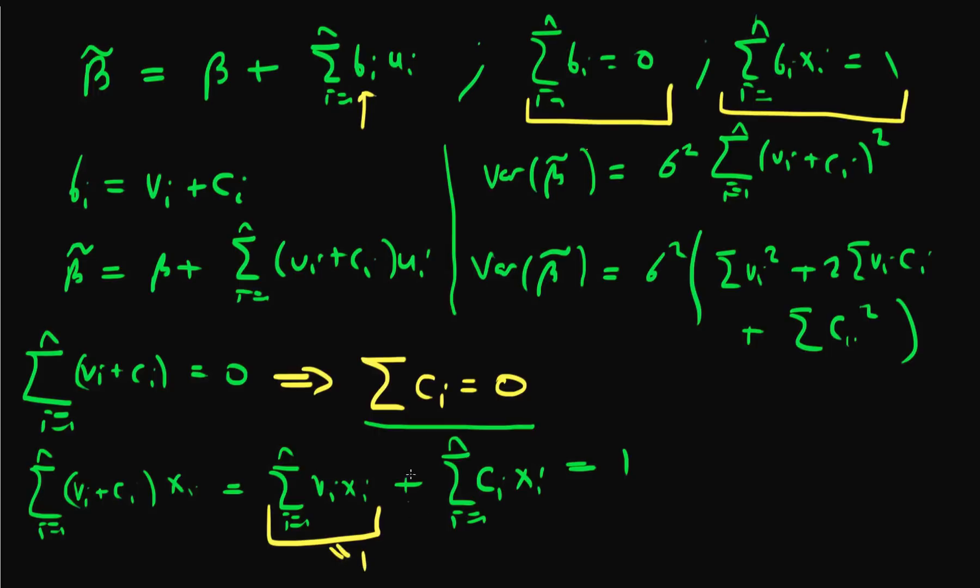Well, if this whole expression equals 1, this means that this term in the middle, the sum of ci xi, has to equal 0. In other words, the sum from i equals 1 to n of ci xi equals 0.